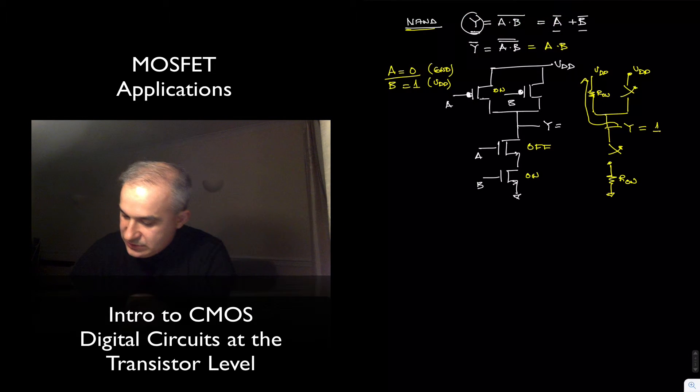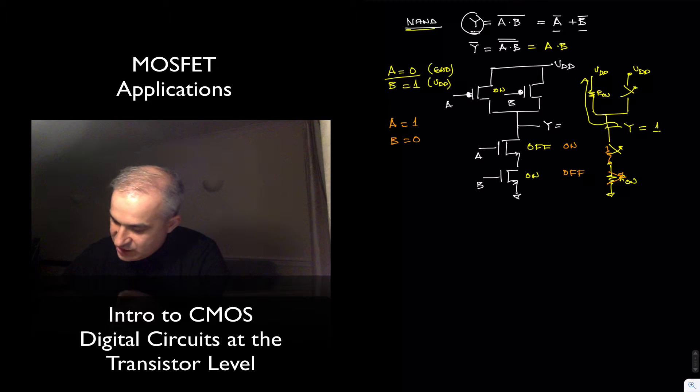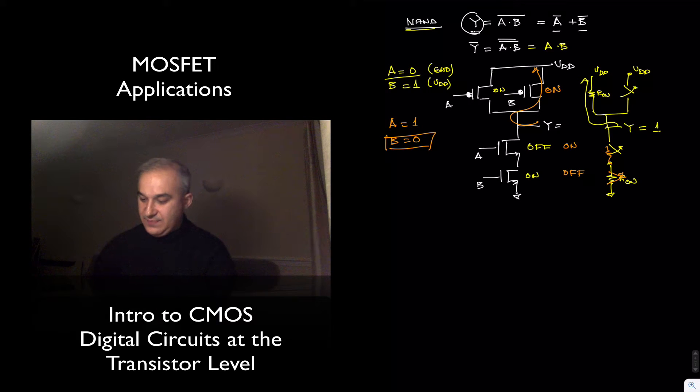Another quick example, let's do A is equal to one, B is equal to zero, it's the same thing here. Now, this will be on, this will be off, so the switch is this one. Still nothing happens, but as long as we have B being zero, this is on, and we have a path to VDD, and this one is off.